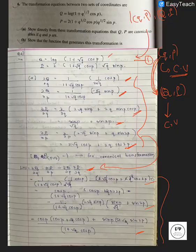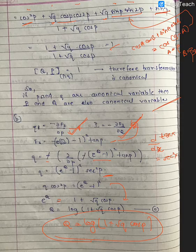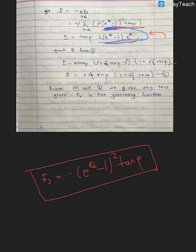This matches exactly the transformation equation for capital P given in the original problem. So the second condition is also satisfied. Since both conditions from the generating function table are verified, we can conclude that F3 = −(e^q − 1)² · tan(p) is indeed the generating function for this canonical transformation. I hope this was clear — thank you for watching.